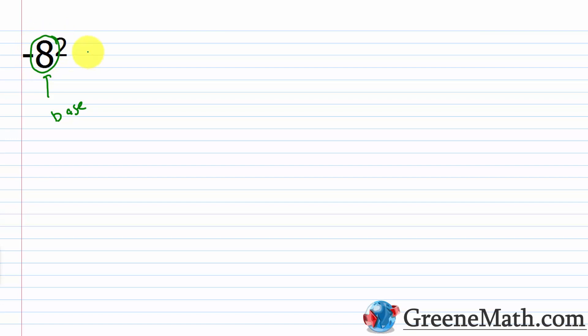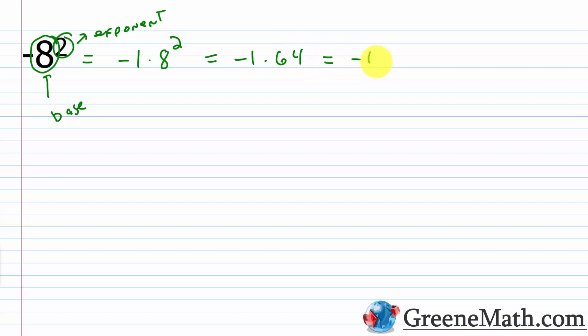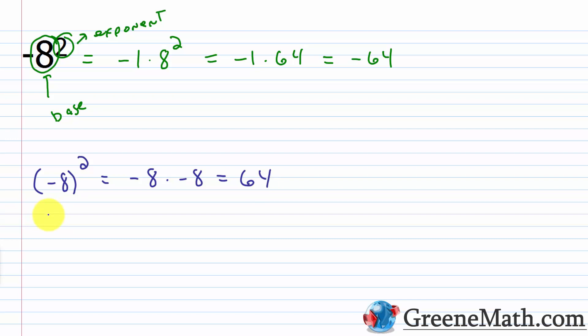What about negative 8 squared with no parentheses around the base? Here we say the base is 8, not negative 8, because we can write this as negative 1 times 8 squared. So the base is 8 and the exponent is 2. We have negative 1 times 8 squared, which is negative 1 times 64, equal to negative 64. If I had set this up as negative 8 inside parentheses squared, then the negative and the 8 are both squared: negative 8 times negative 8 is 64. Please make sure you understand the difference between having parentheses around a negative and not, because it can definitely change your answer.